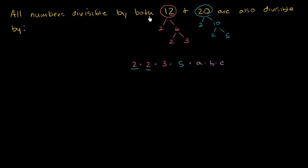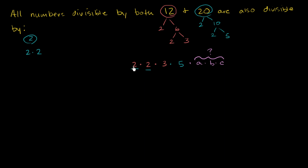All numbers divisible by both 12 and 20 are also divisible by... Well, we don't know what those extra factors are — they might be 1's, or the number might just be 60, or 120, or something else. The only numbers we know can divide into this are combinations of the prime factors 2, 2, 3, and 5. So 2 works, 4 (which is 2 times 2) works, and 6 (which is 2 times 3) also works.